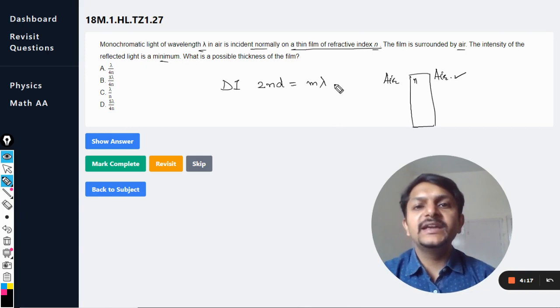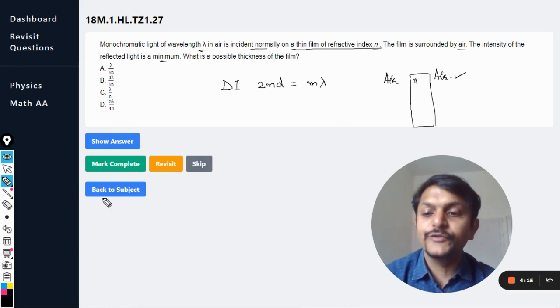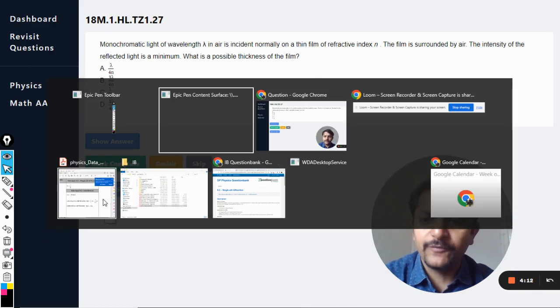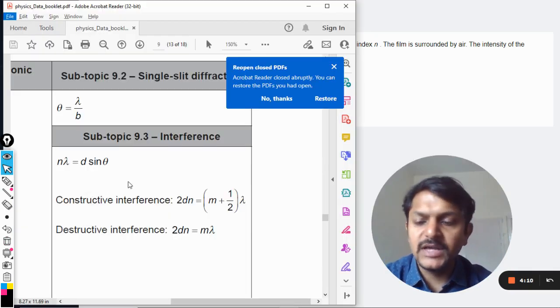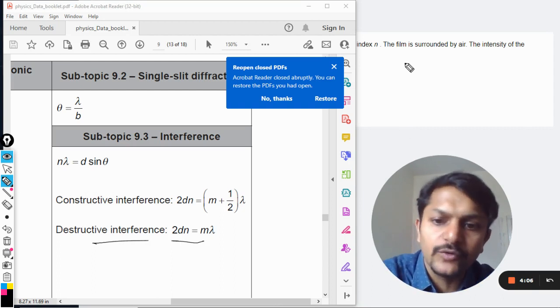I've opened it just a moment. Yeah, here it is: destructive interference 2nd is equal to m lambda. So we are going to use this formula.